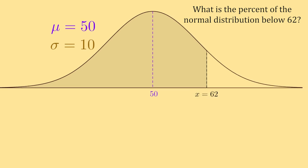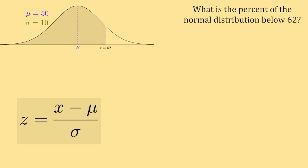We are going to find 62's z-score and look it up in the z-table in order to find the answer to this problem. The z-score of 62 can be found by plugging 62, our mean of 50, and our standard deviation of 10 into this formula: z equals x minus the mean, all divided by the standard deviation.